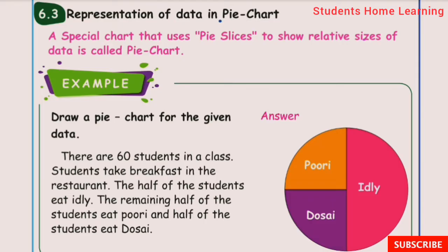Representation of data in a pie chart. A special chart that uses slices to show relative sizes of data is called a pie chart. Each slice represents one piece of data, showing the size of that portion.